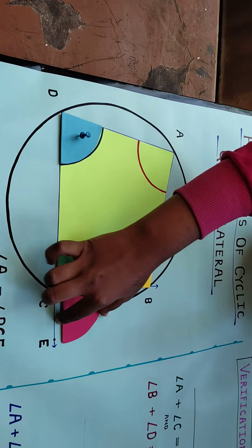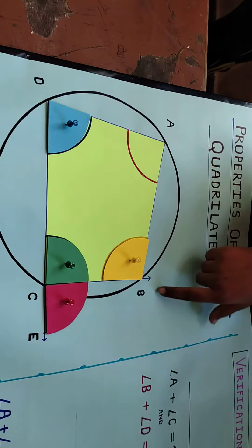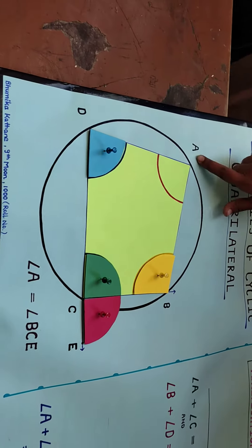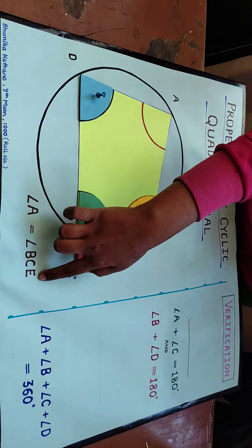Now placing back the replica again, we can see that this demonstrates angle BCE equals angle A.